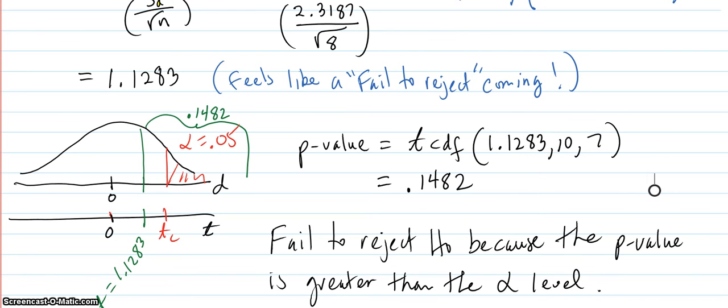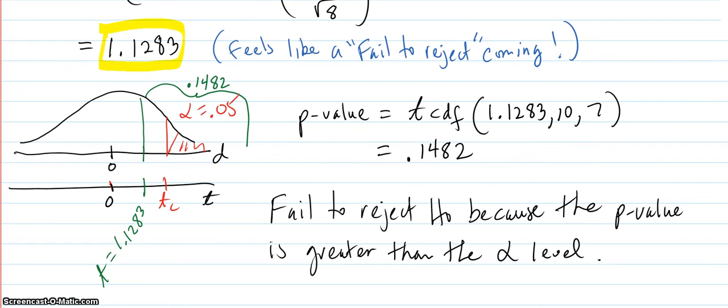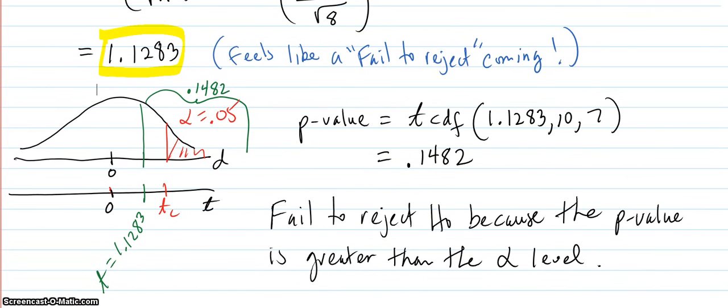Now I'm going after. I get my t-value comes out to be 1.1283, and that feels like a fail to reject because you know that's a pretty low t-value as these things go from your experience in the course. But let's just plug on and chug on and see what happens.